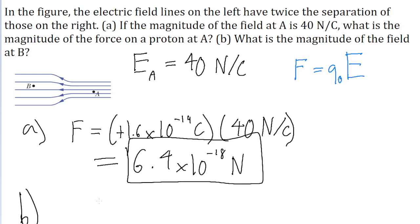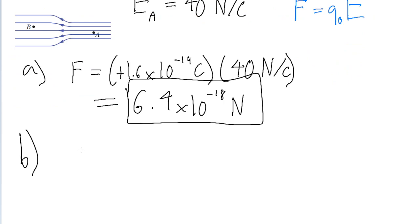That means that the electric field at point A is twice as strong as the electric field at point B. Or in other words, the electric field at point B is half as strong as the electric field at point A.